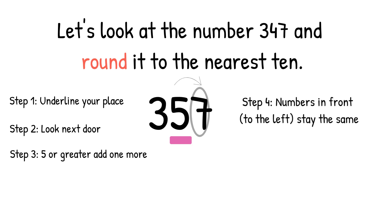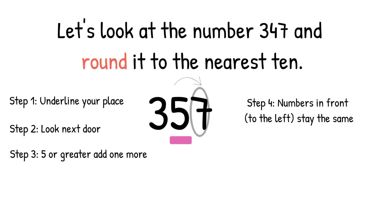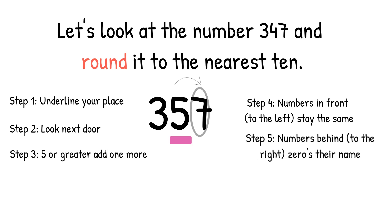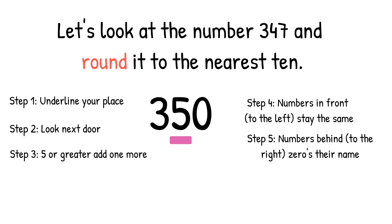Step 4: the numbers in front of, or to the left of, the tens digit will stay the same. Step 5: the numbers behind or to the right of the tens column — zeros their name. So we'll change the 7 to a zero and our new rounded number will be 350.